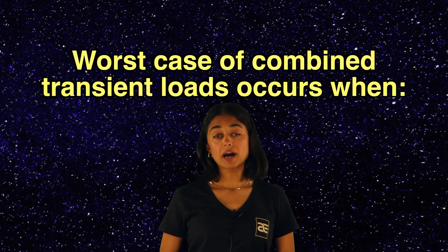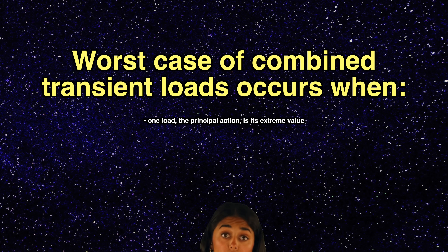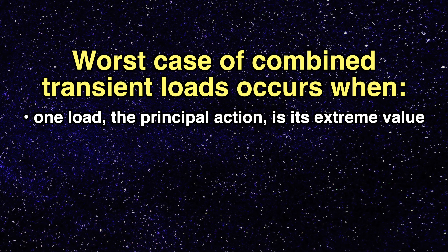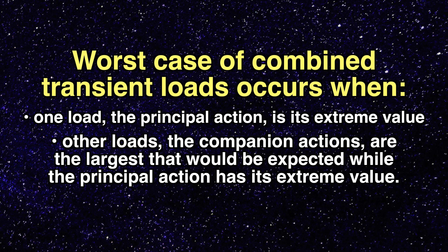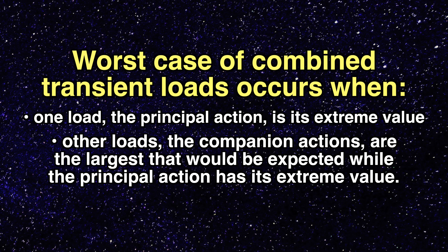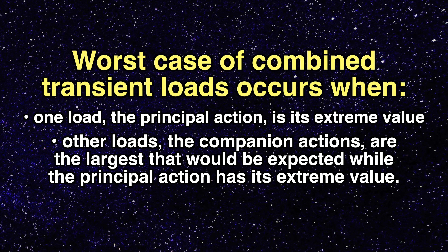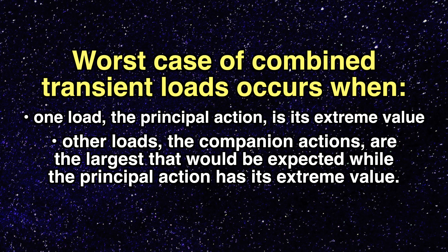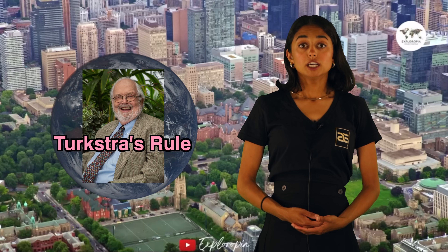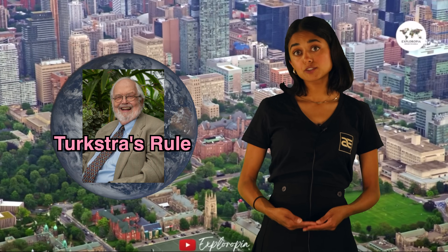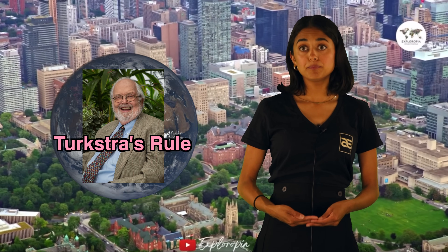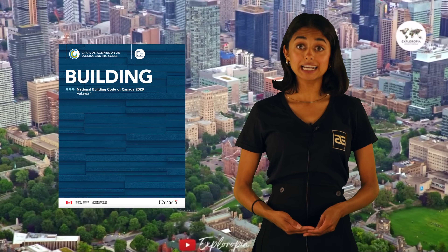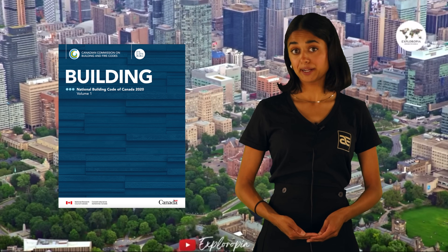The worst case of combined transient loads occurs when one load, the principal action, is at its extreme value. Other loads, the companion actions, are the largest that would be expected while the principal action has its extreme value. Turkstra's Rule has become the basis of structural design in building and bridge design codes around the world, including the National Building Code of Canada.